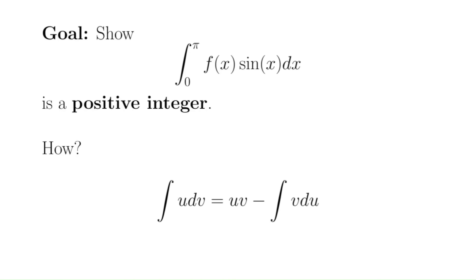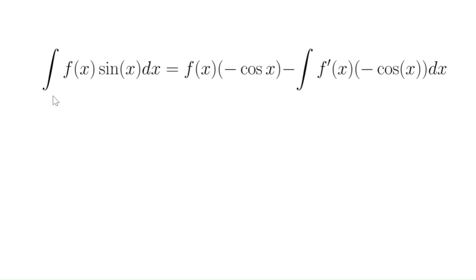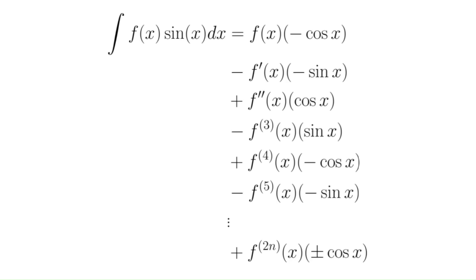Remember the integration by parts formula: the integral of u dv equals uv minus the integral of v du. For our specific integral — looking at the indefinite integral first and plugging in 0 and pi at the end — we let u be f(x) and dv be sine(x) dx. Then f prime will still be a polynomial of one degree less, and we can do integration by parts again repeatedly until the polynomial has vanished. There's a streamlined way of doing this called tabular integration, or the DI method, and this is what we end up with — stopping after 2N derivatives because f was a polynomial of degree 2N.